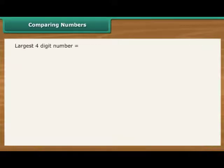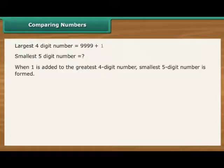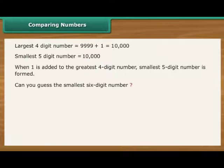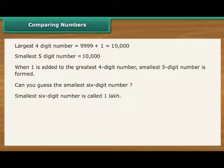The largest four-digit number is 9999. What should be added to this number to make smallest five-digit number? The answer is, we need to add 1. Let us find out. On adding 1 to 9999, we get 10,000, which is smallest five-digit number. Can you guess the smallest six-digit number? Smallest six-digit number is 1 lakh.